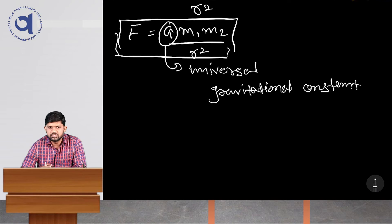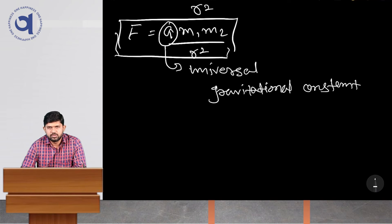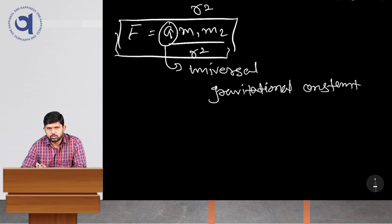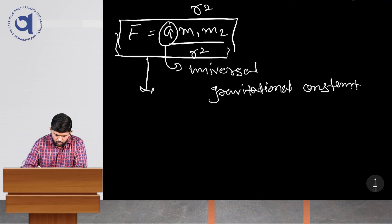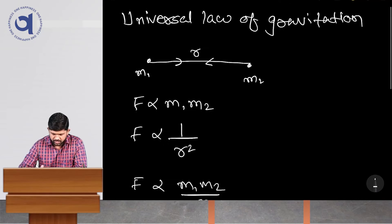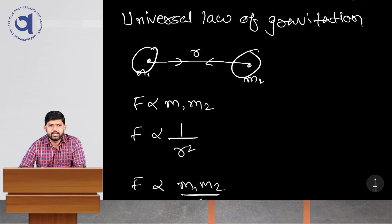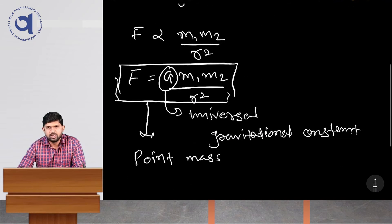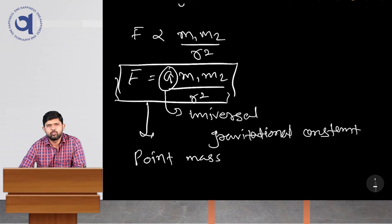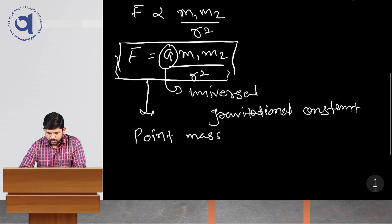What this equation tells us is that the force is always proportional to the product of the two masses and always inversely proportional to the square of the distance between them. One very important point that many students miss is that this equation is applicable to point masses only. If we take extended objects instead of point masses, the equation becomes more complicated. For simplicity, to understand the law of gravitation, we consider point masses: F equals G M1 M2 by R squared.